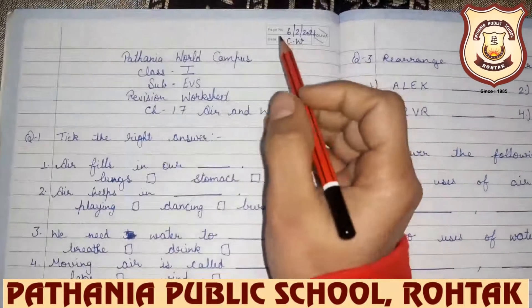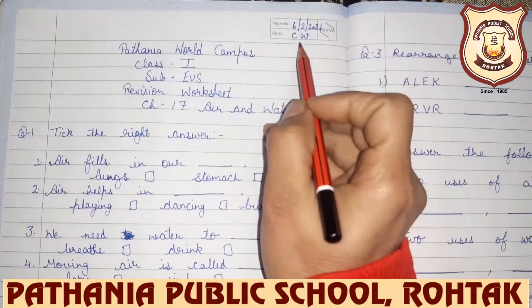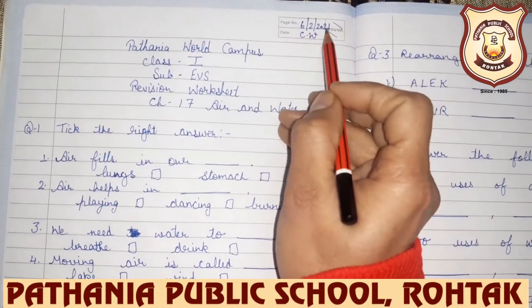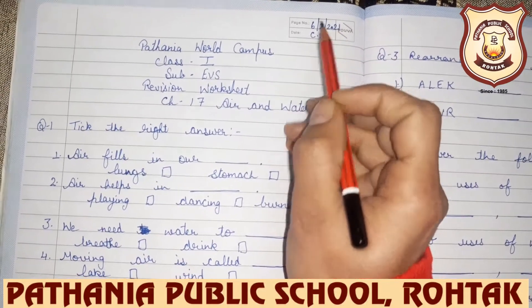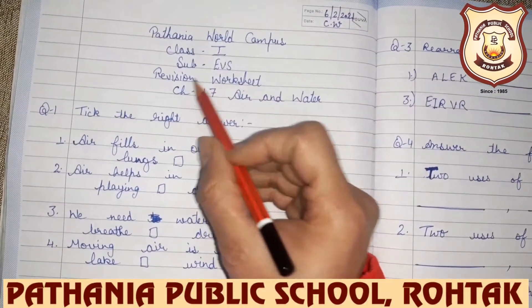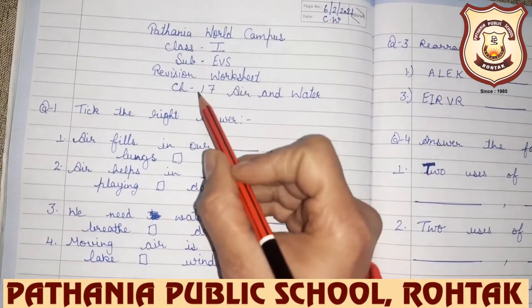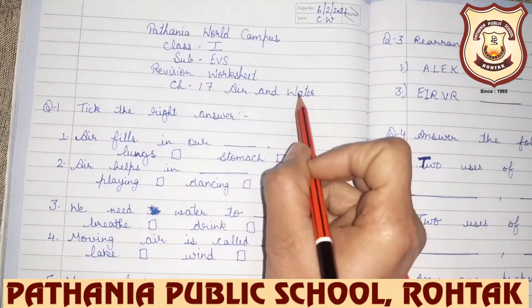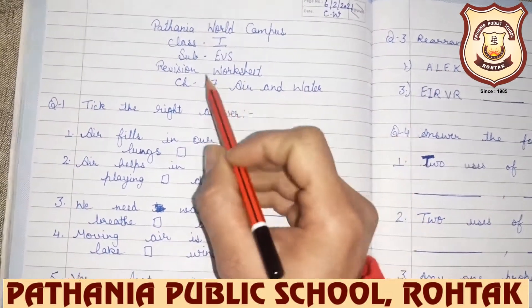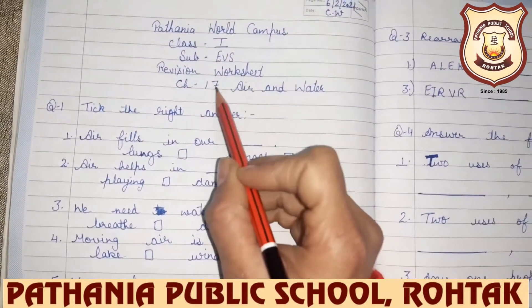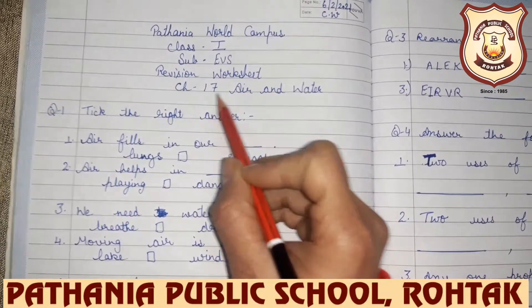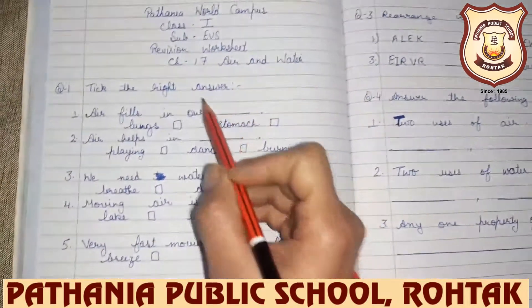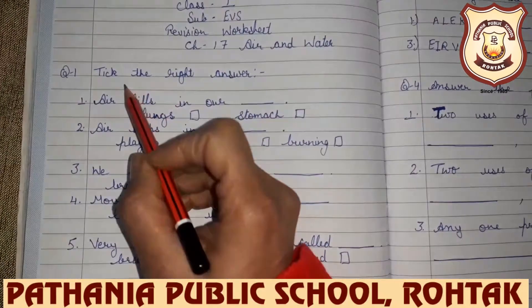Now write down classwork, date 6-20-21. You will write: Revision Worksheet, Chapter 17, Air and Water. Let's see what is our first question.